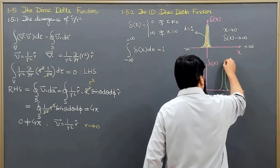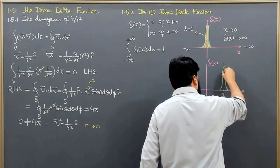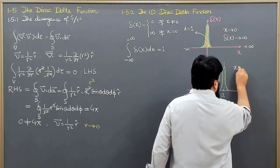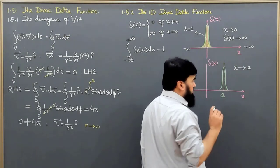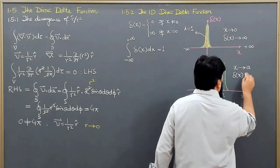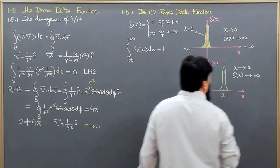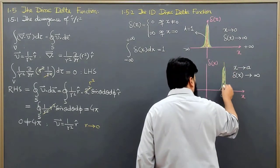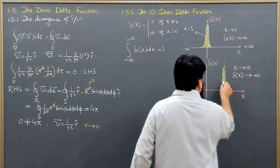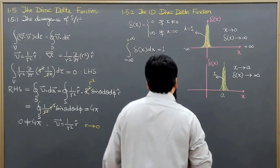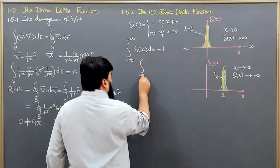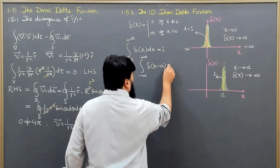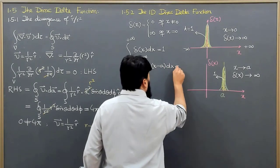If x equals a, then our delta function δ(x-a) is active at x equals a. When x goes to a, δ(x-a) will blow up — it goes to infinity. The area under the curve is still equal to 1, so we write: the integral from minus infinity to plus infinity of δ(x-a) dx equals 1.